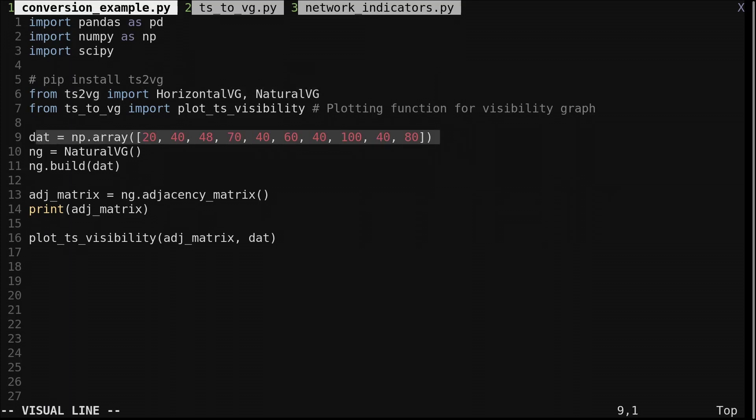We have a numpy array. This is the same example series we saw earlier. We create an instance of natural VG, then call its build function with the data.